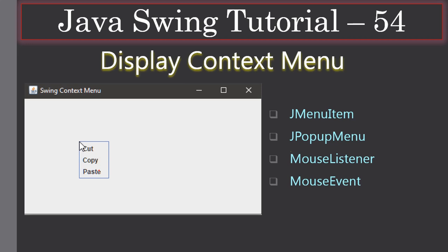This example requires a JMenuItem. In this series you are already aware of how to create a JMenuItem — here we are seeing three menu items. To display a pop-up menu or context menu, we need a class called JPopupMenu. So we create a JPopupMenu and then we will add menu items to it.